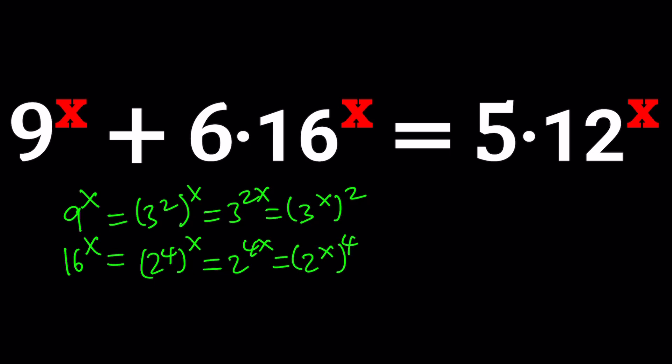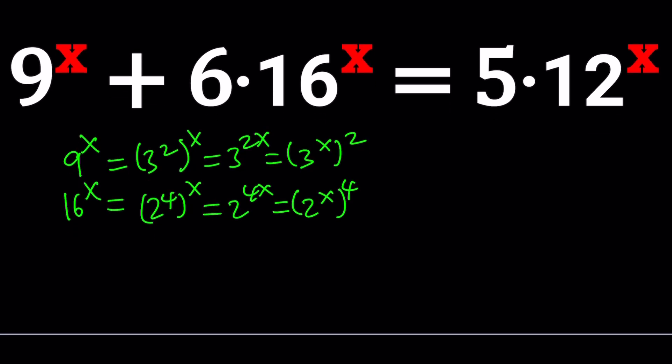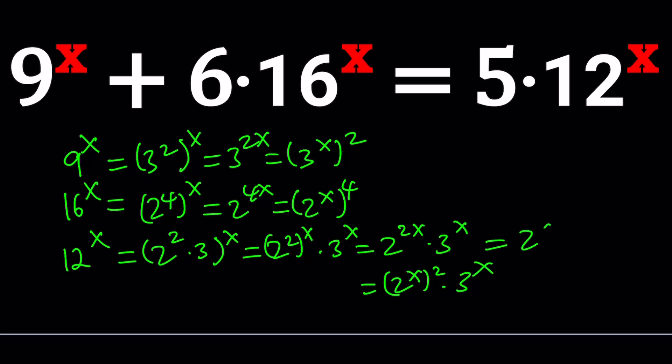At this point we want to use substitution but we have one more term which is 12 to the power x. That is actually 4 times 3 which is 2 squared times 3 raised to the power x. Then you're going to have 2 to the 2x which is 2 to the x squared times 3 to the power x. And now we're going to use substitution.